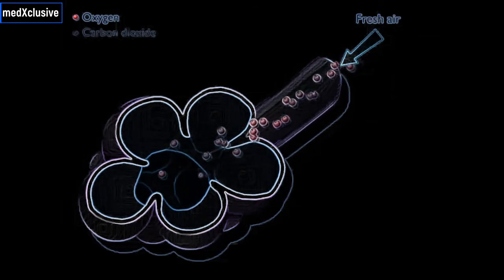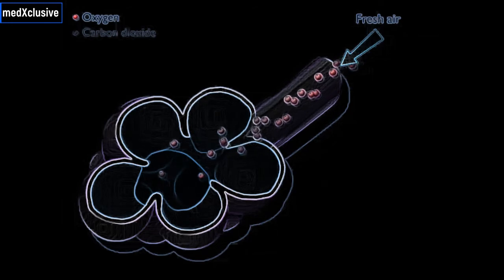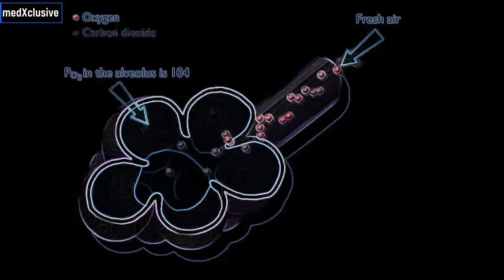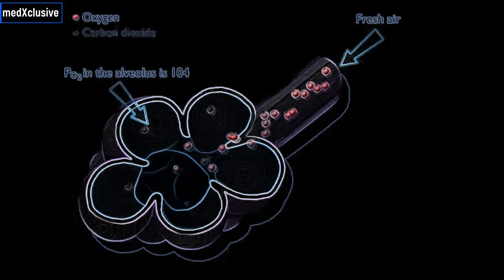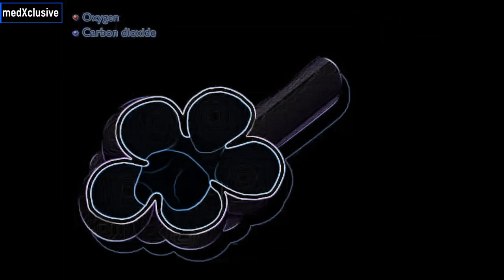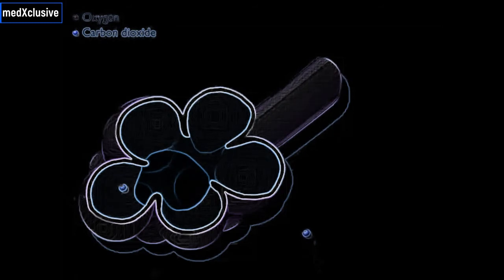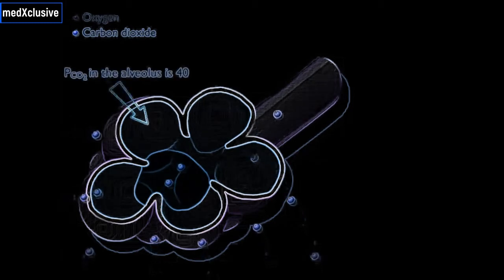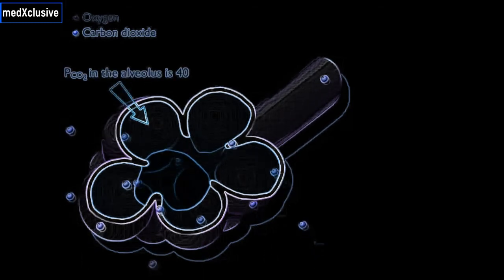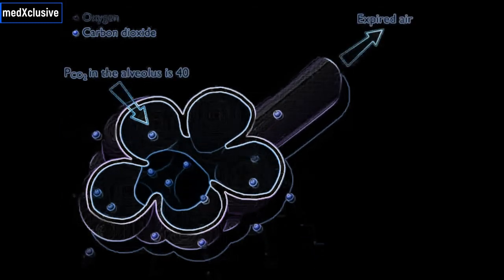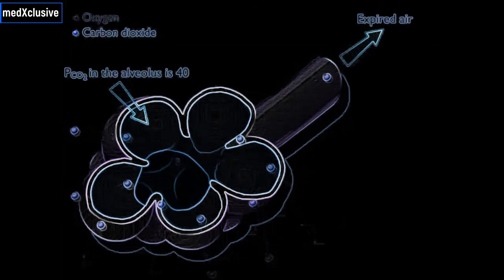The partial pressure of oxygen in the air within the alveoli is 104 millimeters of mercury. Carbon dioxide that enters the alveoli from the blood causes the carbon dioxide concentration in the air of the alveoli to be 40 millimeters of mercury. Carbon dioxide is continually removed from the alveoli as air is expired.